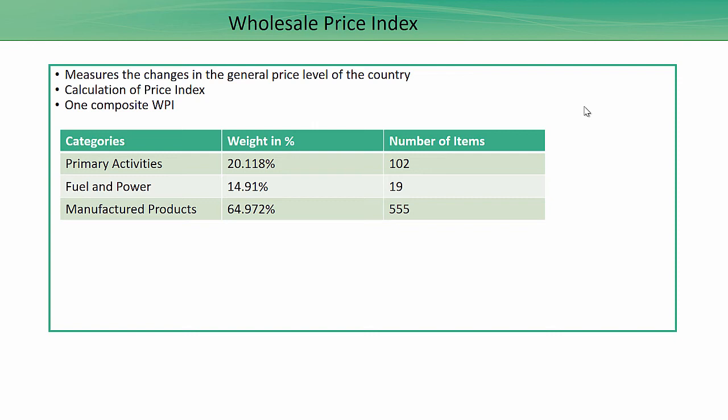The method of computing the Wholesale Price Index is exactly the same as the CPI. In India, we are currently following the base year of 2004–2005. The construction of WPI in India is done under three primary categories: primary articles, fuel and power, and manufactured products.